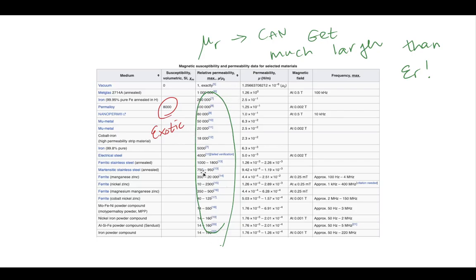When you look up tables of permeability, you can see that compared to permittivity, the relative permeability can get much larger. For example, iron is already six figures, and things like mu-metal glass can be 1,000,000. When we looked at a table of permittivity, those values were often around 1 to 10 for most normal materials. So the relative permeability can get a lot larger than the relative permittivity.